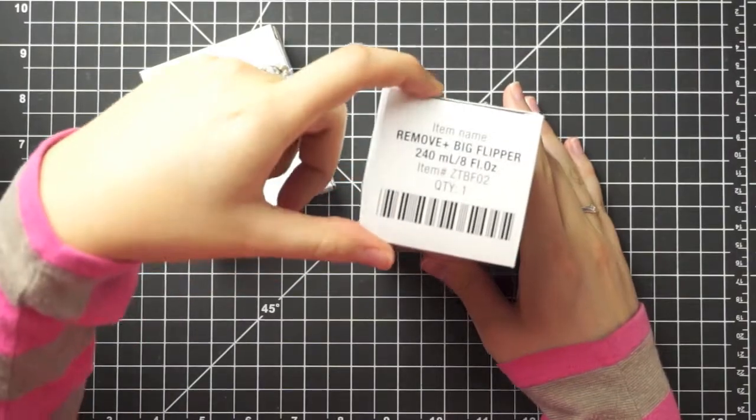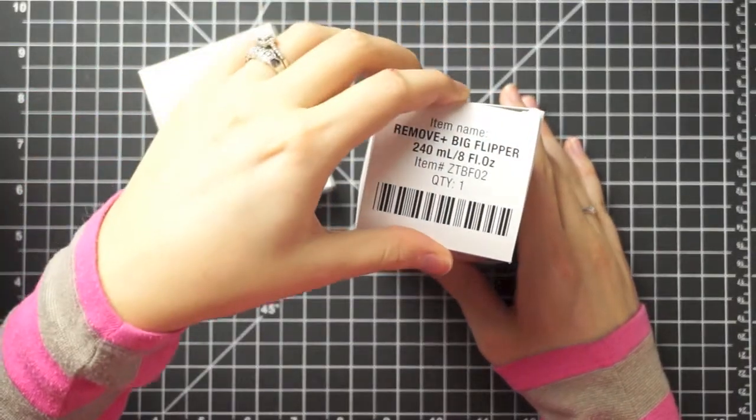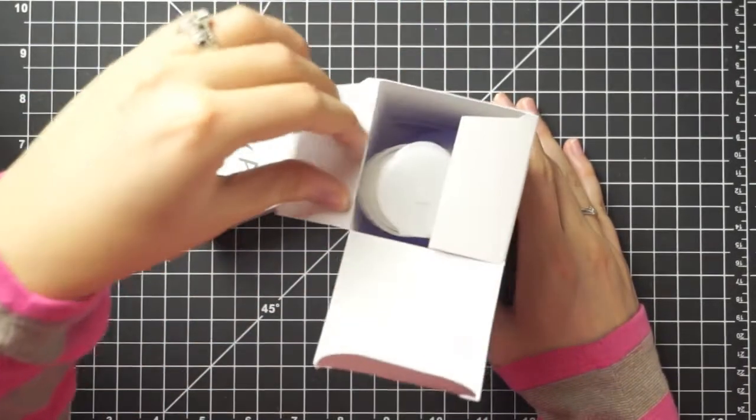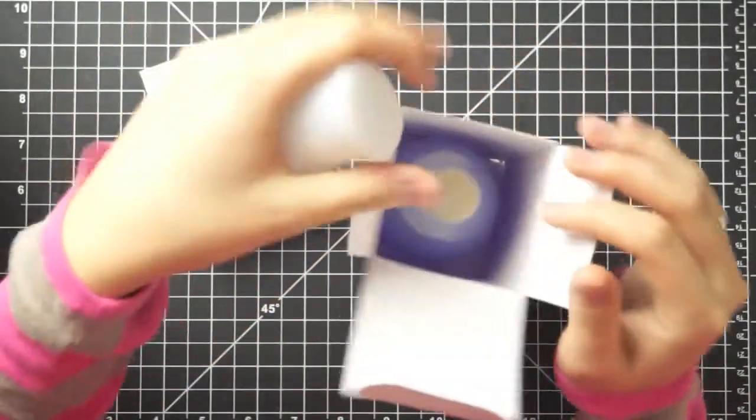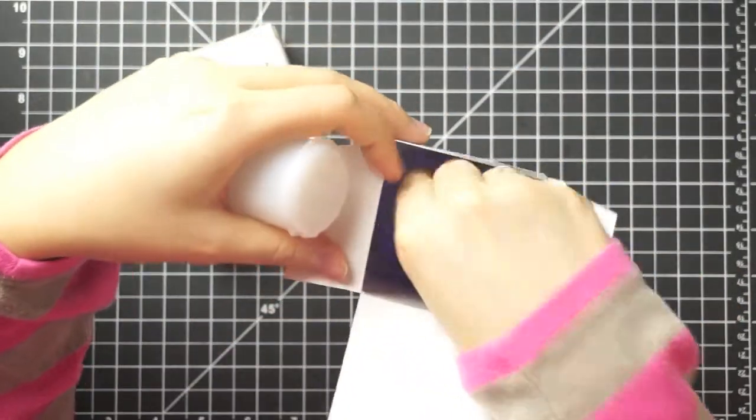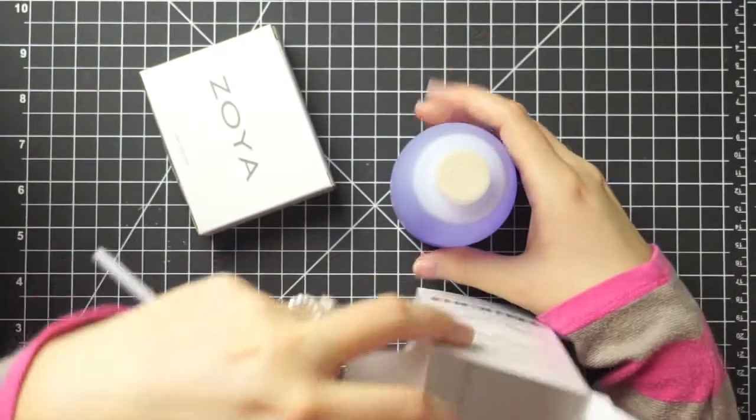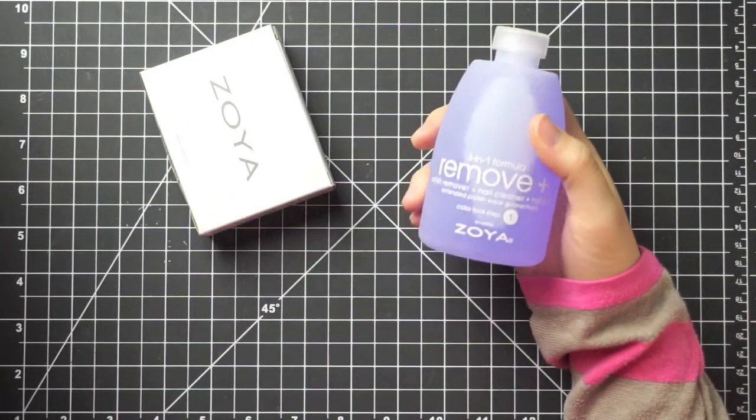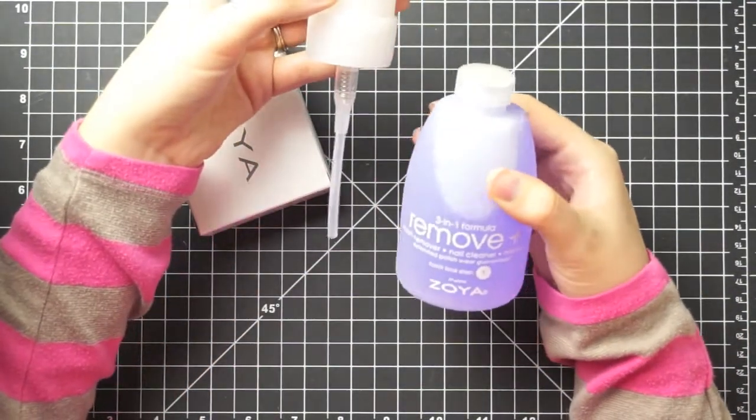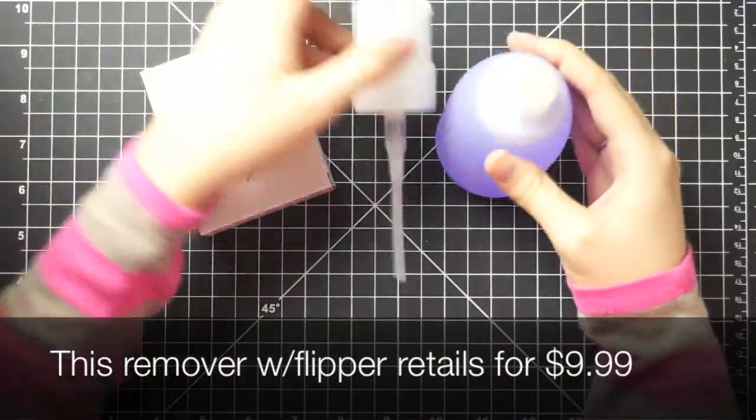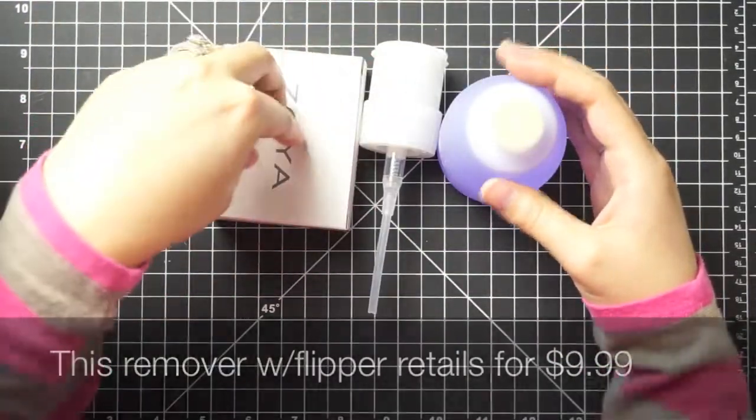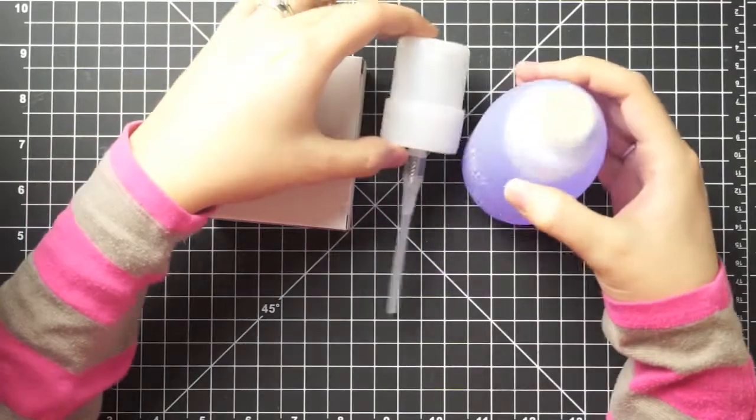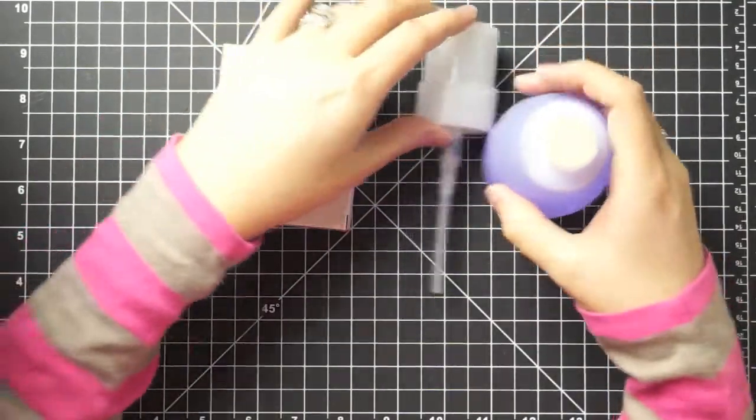This is the eight fluid ounce with the big flipper top which is the one I already have. I actually would love to have two of these so I went ahead and got this deal. Their nail polishes retail for $9 each and then I think this actually retails for $9 or $10 as well. So it was a really good deal. Three $9 nail polishes plus $9 or $10 remover. So I was really excited about that.